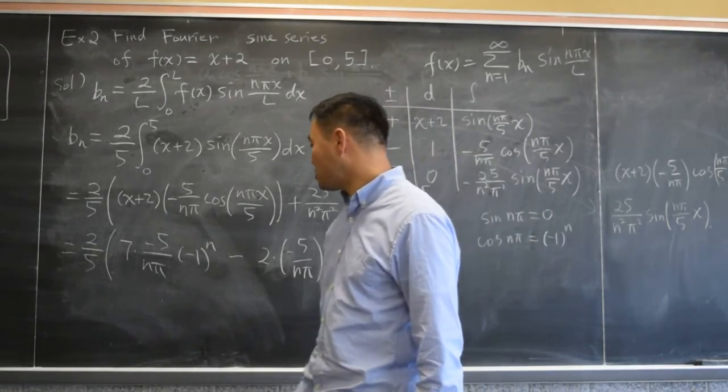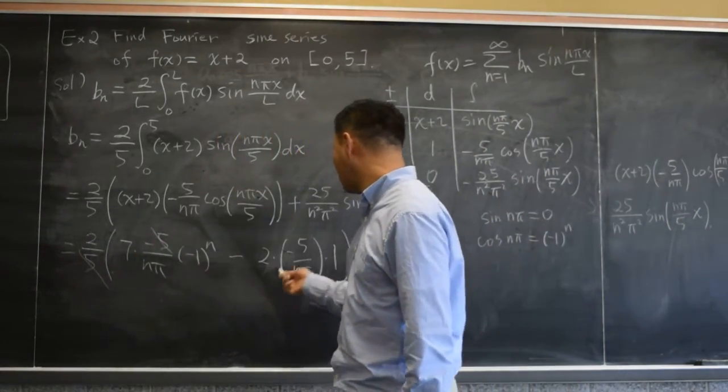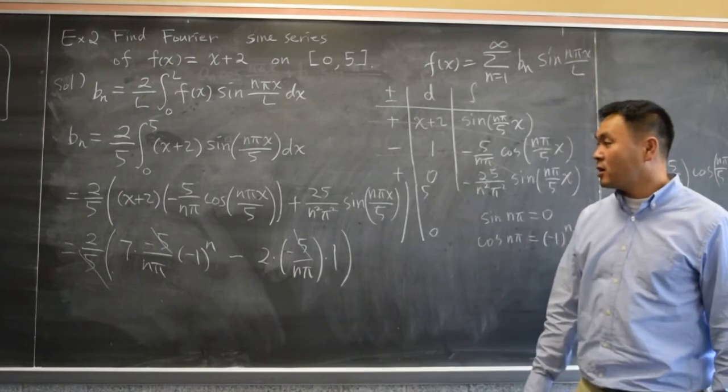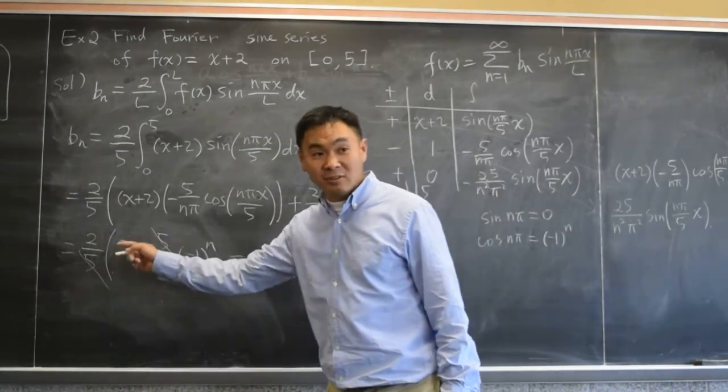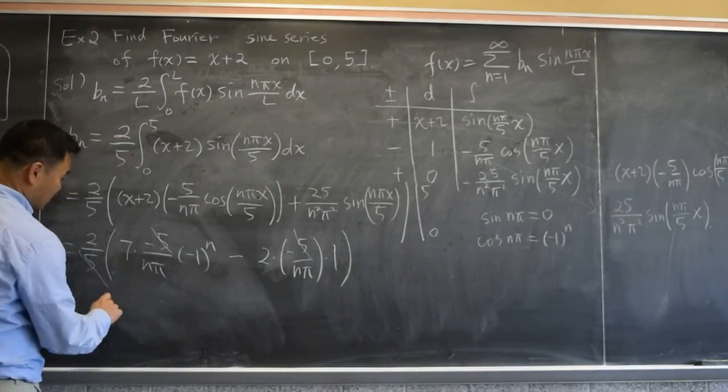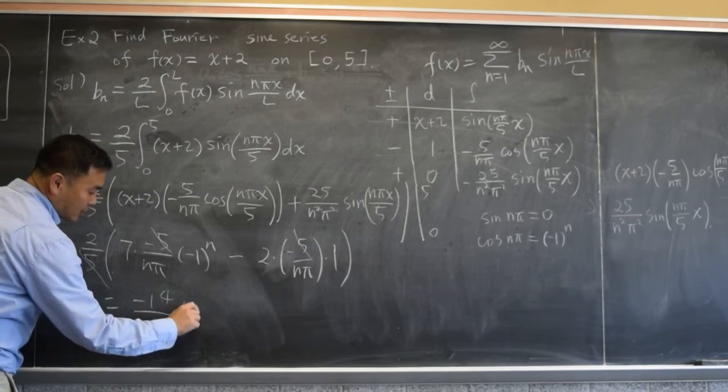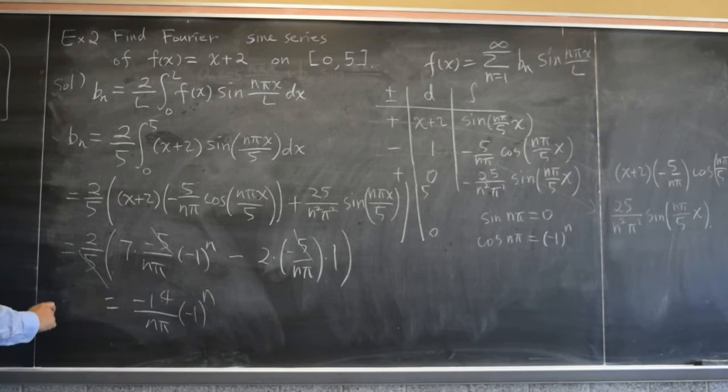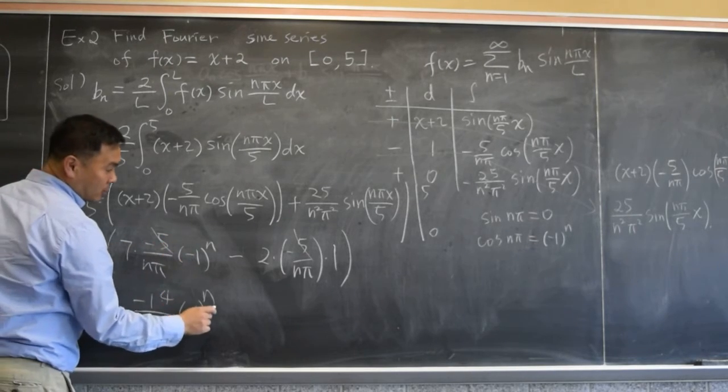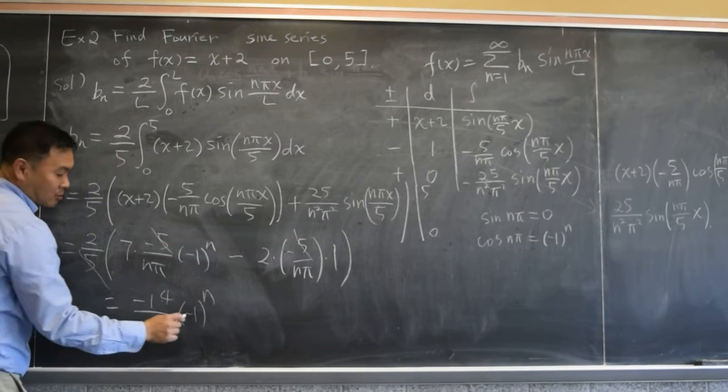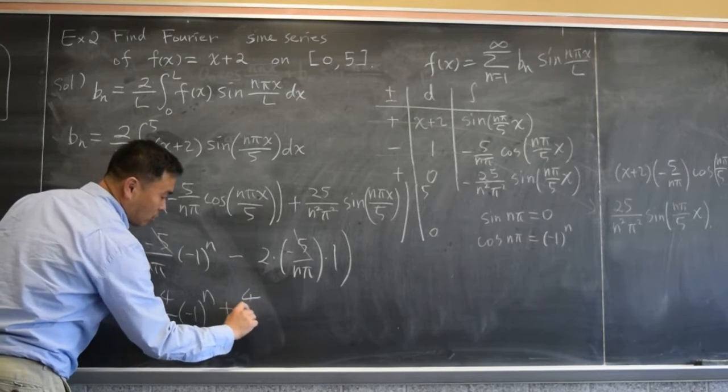We should simplify it. How do we simplify it? I guess 5 can cancel with both of these. And then 2 times 7, that's 14. So you get negative 14 over n pi, negative 1 to the n power. And then 2 times 2 is 4. And minus minus is plus. It's plus 4 over n pi.